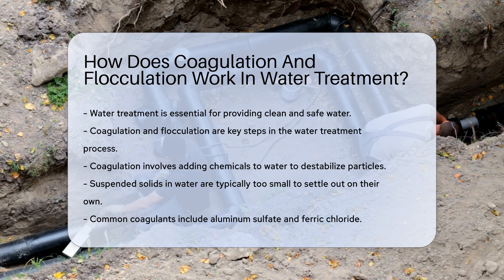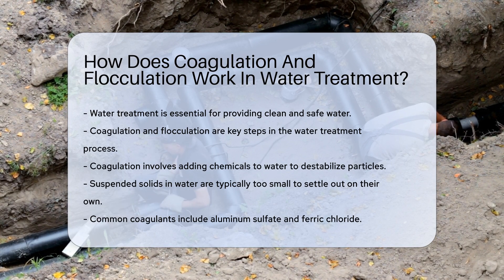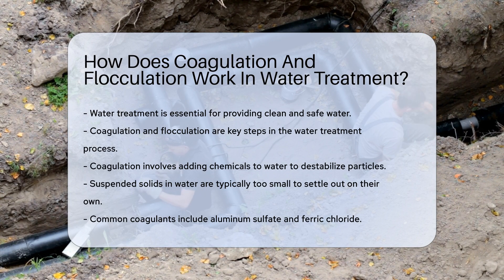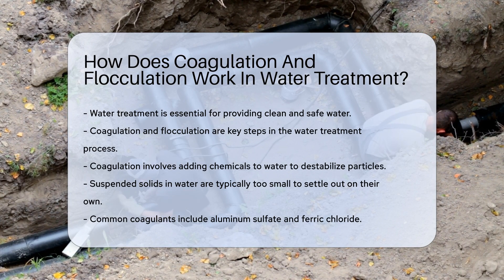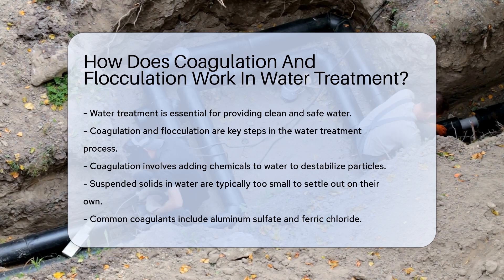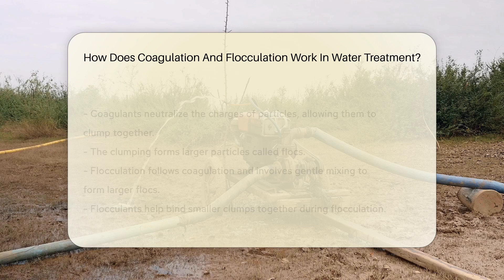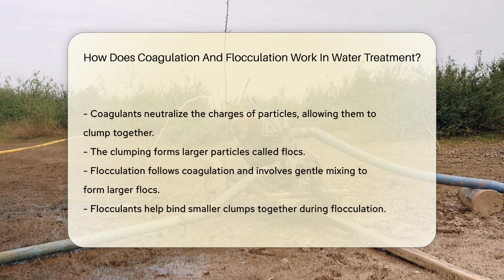Coagulation involves adding chemicals to water to destabilize particles. These particles are typically suspended solids that are too small to settle out on their own. Common coagulants include aluminum sulfate and ferric chloride. When added, these chemicals neutralize the charges of particles, allowing them to clump together. This clumping forms larger particles called flocs.